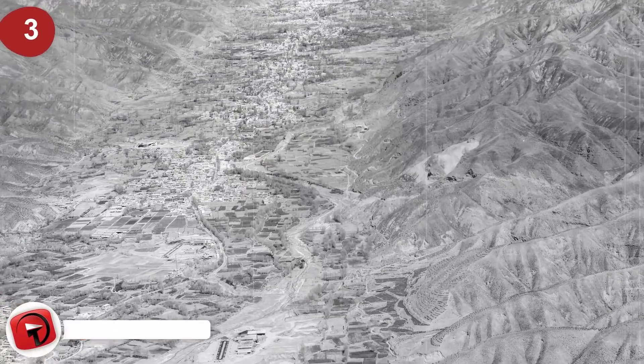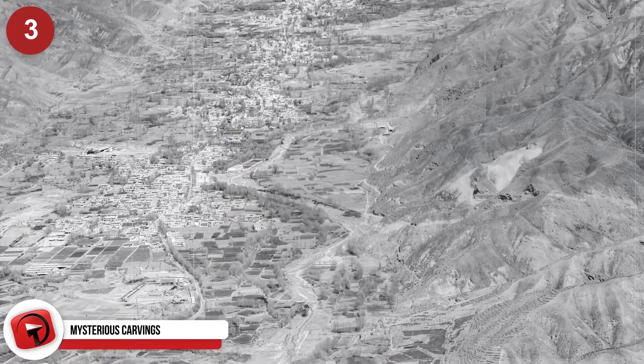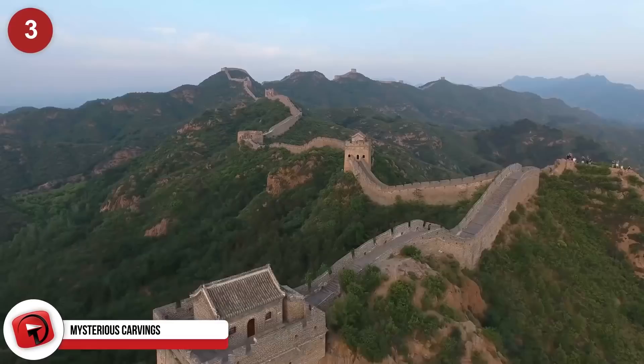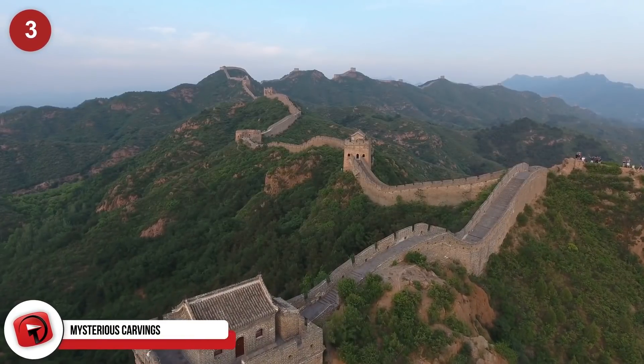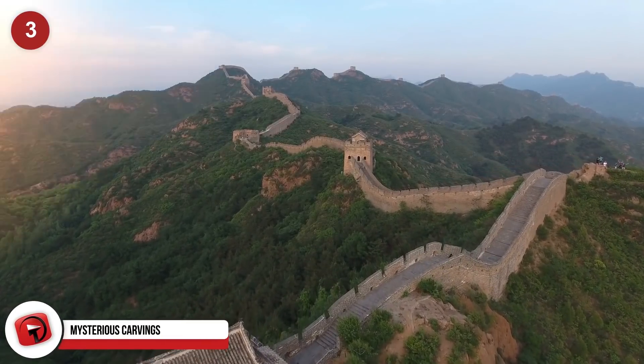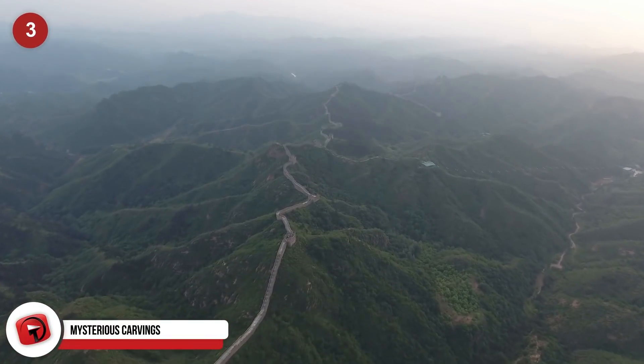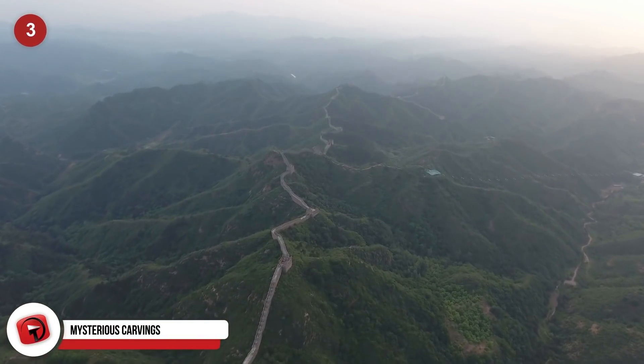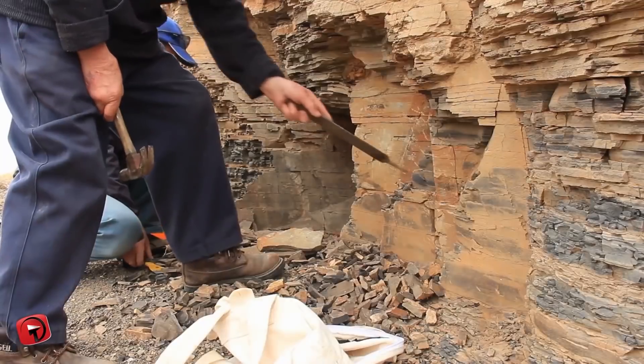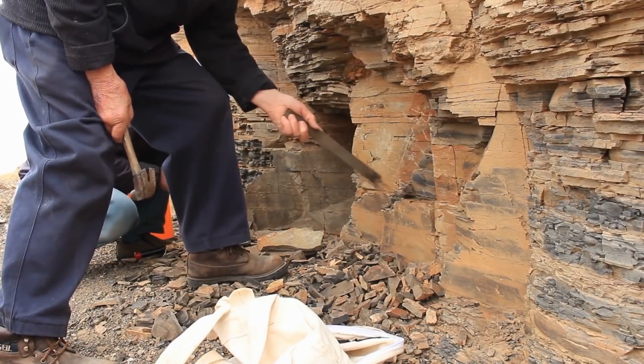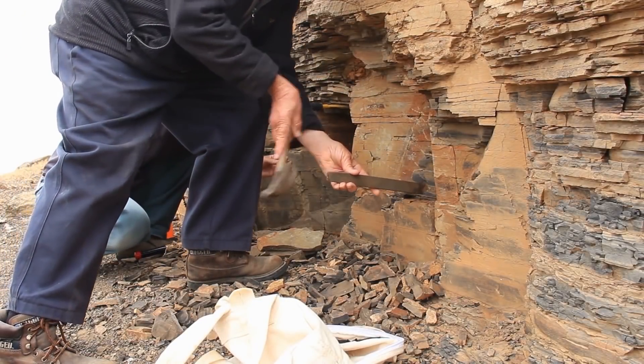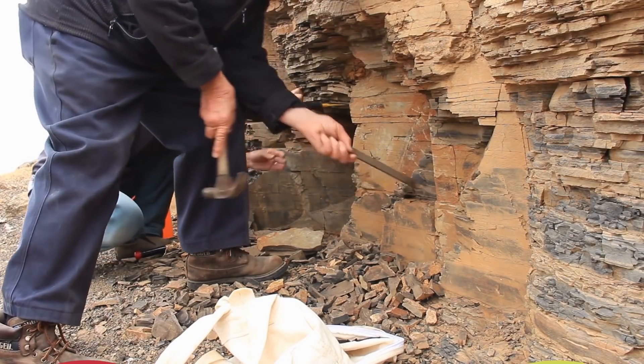Mysterious carvings. For centuries, villagers living in the dusty hills of China's lowest plateau believed that the rock walls near their homes were actually part of the Great Wall of China. It does make sense considering that the dry region has been at the frontier of Chinese rule for over 2,000 years, but recently a team of Chinese archaeologists investigated this strange rock wall and they began to unearth some very bizarre findings.